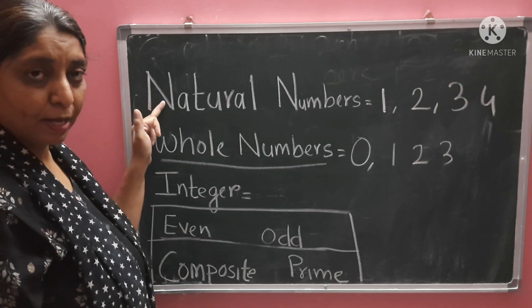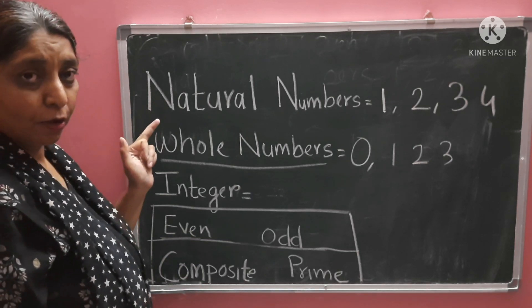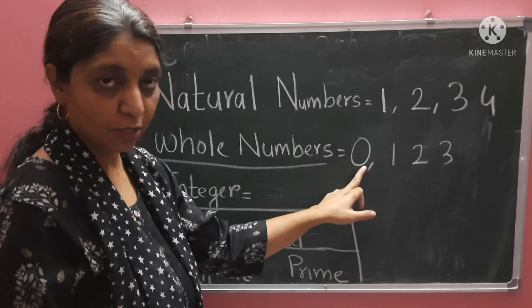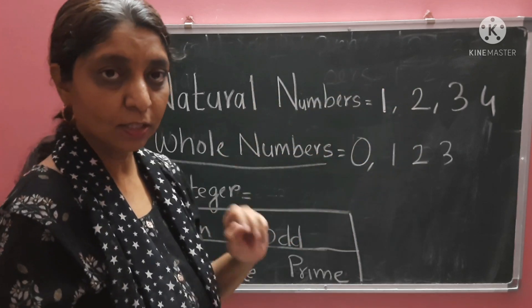So, we have seen what's the difference between natural numbers and whole numbers? Whole numbers begin with zero, natural numbers begin with one.